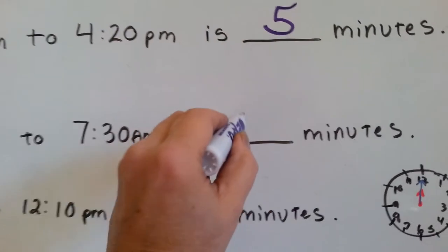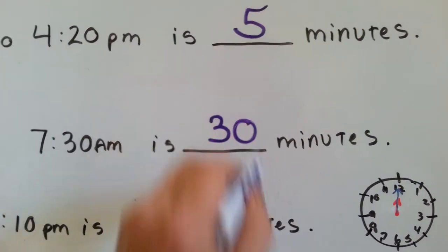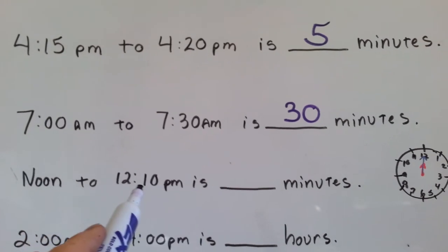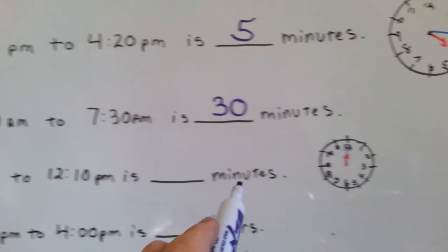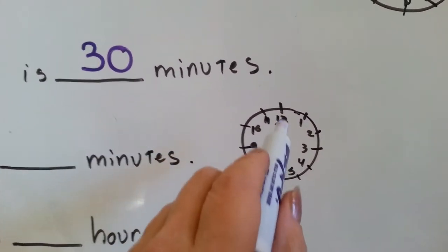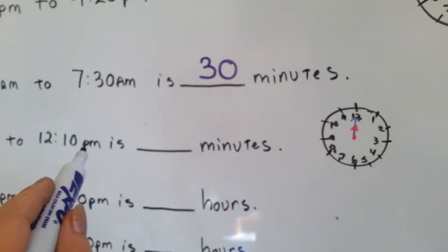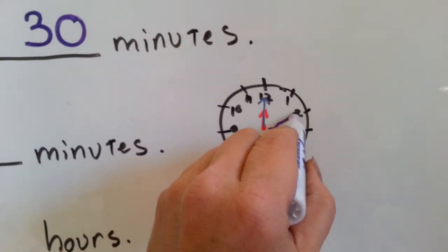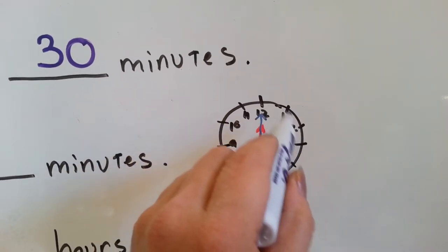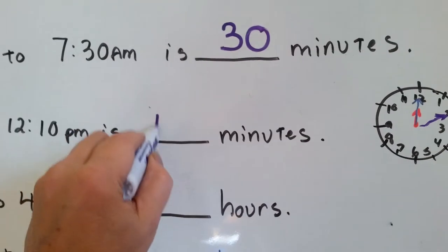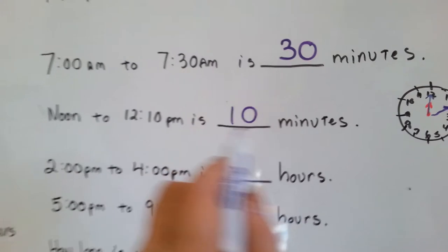Well, when both hands are pointing straight up on the clock, it's noon. When it's 12:10, the minute hand is pointing to the 2. How many minutes have gone by? 5, 10. 10 minutes. 10 minutes have elapsed.